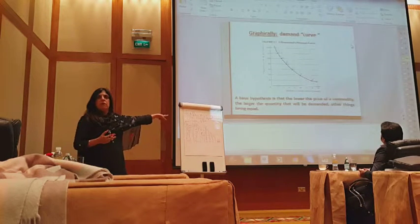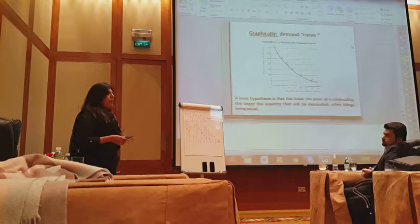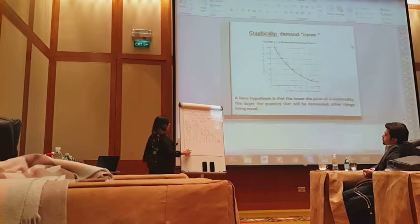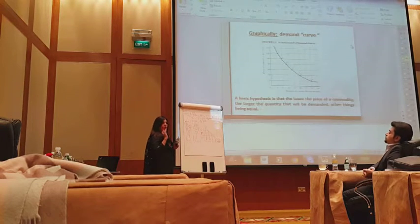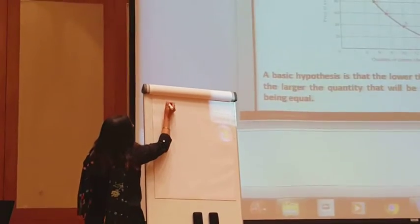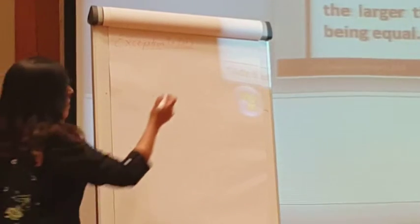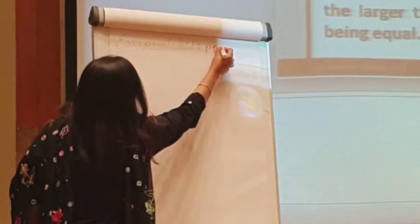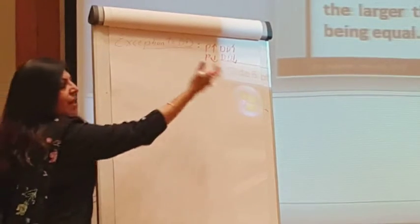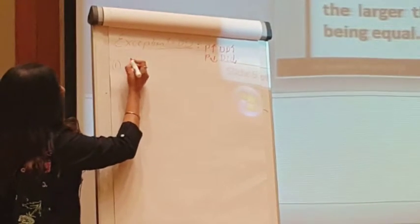Now, when we did the law of demand — price up demand down, price down demand up — there is something called exception to the law of demand. We are now talking about things outside the law of demand. For exceptions, we write: when the price is up the demand is also up, and when the price is down the demand is also down. The first point is Giffen Goods.